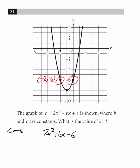So here we have 2 times negative 2 squared plus negative 2b minus 6 equals negative 6. The negative 6s are going to cancel out, and we're going to get 8 minus 2b equals 0.